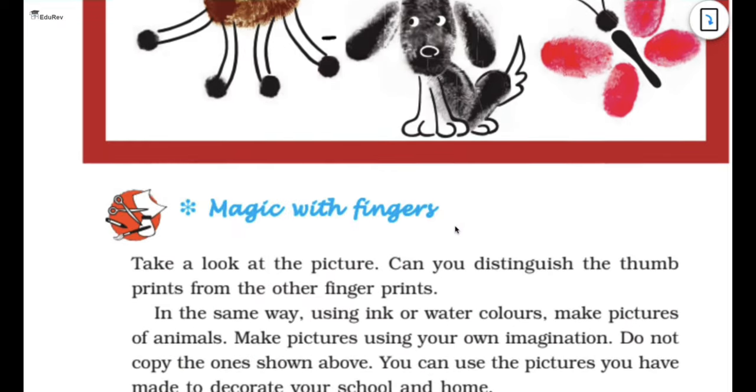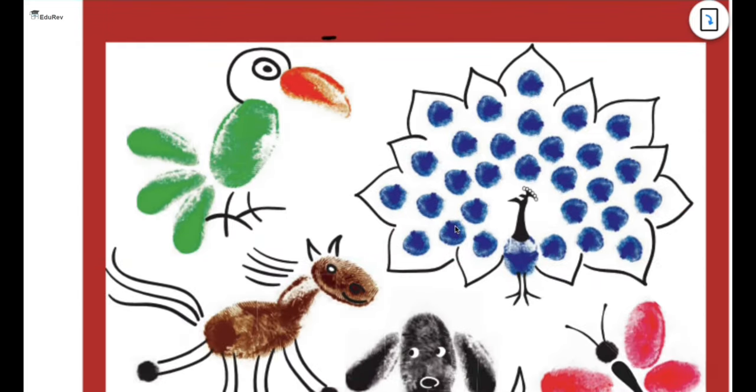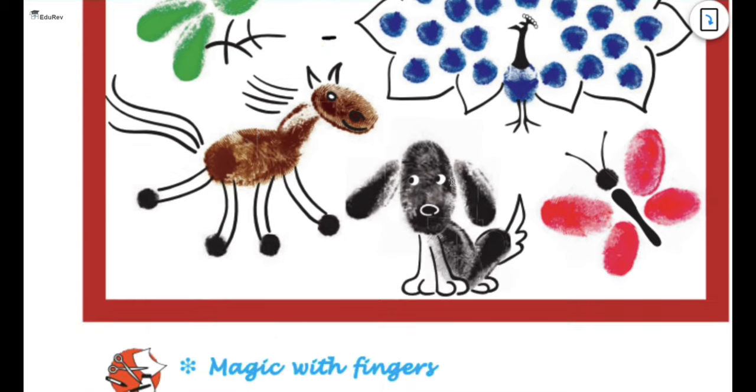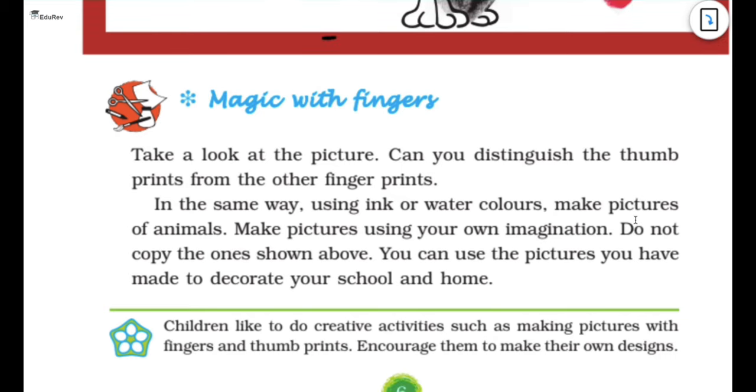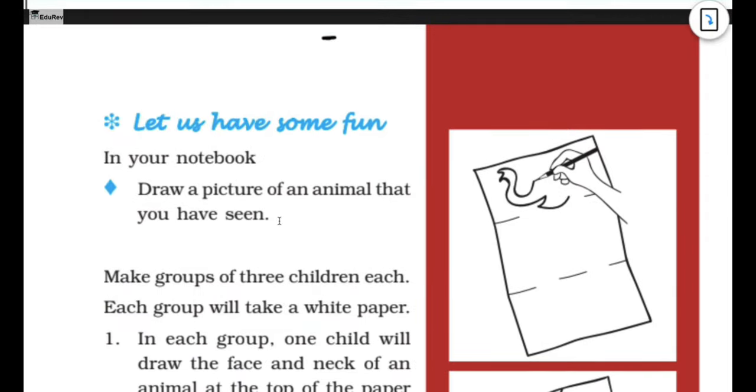So what a beautiful picture this is. So we have to take a look at the picture that is given above. And can we distinguish the thumbprints from the other fingerprints? I think yes we can. This is a thumbprint. Using ink or watercolors, you have to make pictures of animals. And make pictures using your own imagination. You do not have to copy the ones that are shown. And you have to make these pictures to decorate your school or your place.